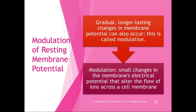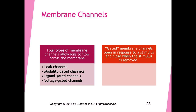There can also be longer-lasting changes in membrane potential, which is called modulation. Modulation refers to small changes in the membrane's electrical potential that alter the flow of ions across a cell membrane. We'll revisit neuromodulators a little later.